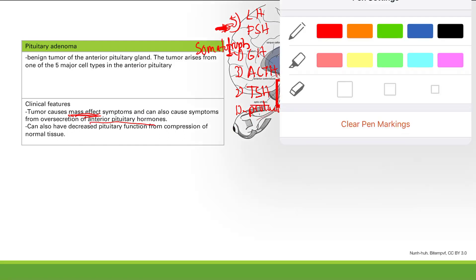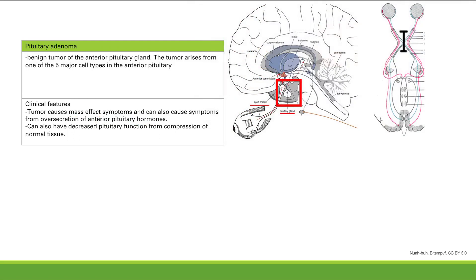Mass effect symptoms include headache — you have a mass in there, that's going to hurt your head. The other symptom is bitemporal hemianopsia. The pituitary gland sits right beneath the optic chiasm, and a tumor here causes compression of the optic chiasm.